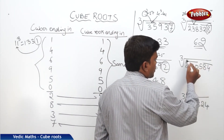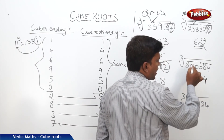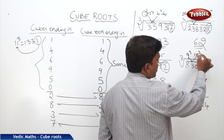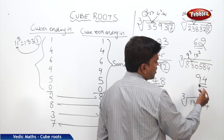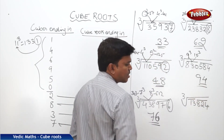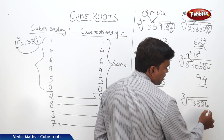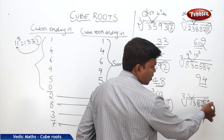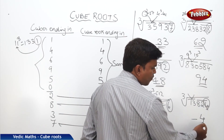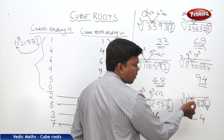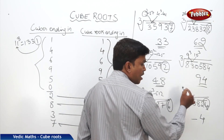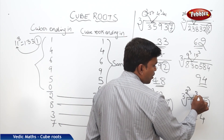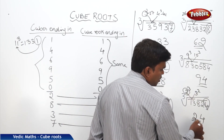Just by looking at the numbers we can say the answer. Next: partition is 3-3 digits. The cube number ends in 4, so the cube root ends in 4. The second partition is 830, which comes between 9 cubed (729) and 10 cubed (1000). We take 9, so the answer is 94. For 13284: partition into 3 and 2 digits. Ending in 4, so cube root ends in 4. The second partition is 13, which comes between 2 cubed (8) and 3 cubed (27). Take the lesser number, 2. Answer is 24.